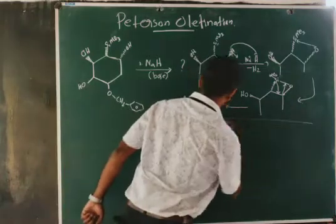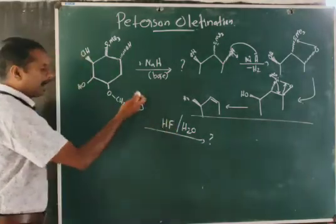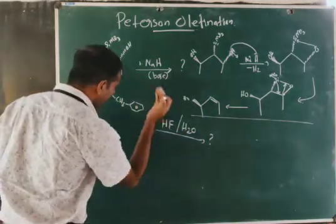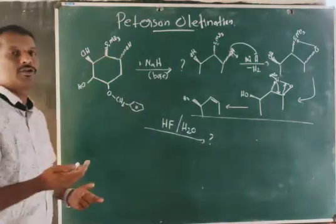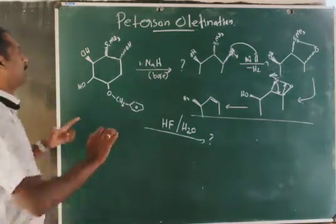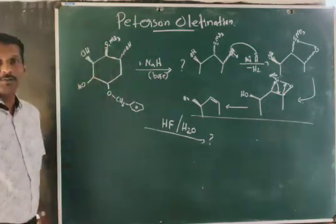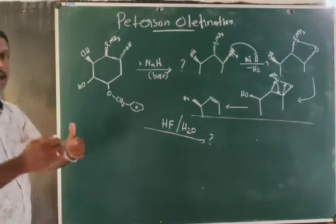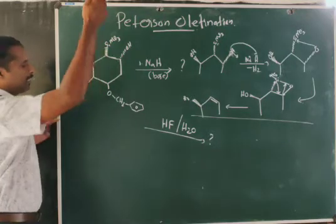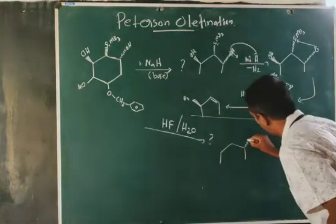That completes the first case — we get that product. In the second case, the same compound is treated with HF (hydrofluoric acid) in presence of water. When beta-hydroxy silane is treated with acid, anti elimination will occur. You can see that SiMe3 and this OH group are anti to each other — one is above the plane and one is below the plane — so elimination takes place between this OH group and SiMe3.